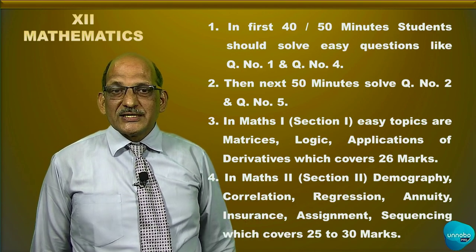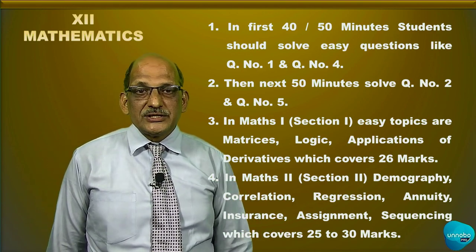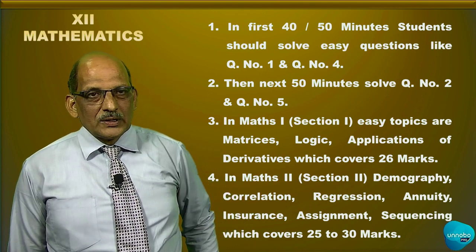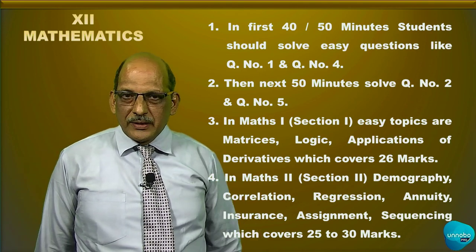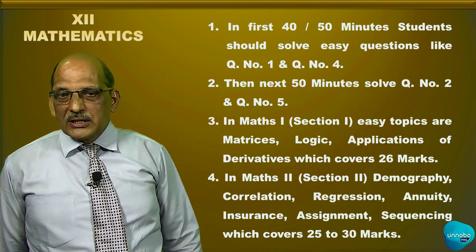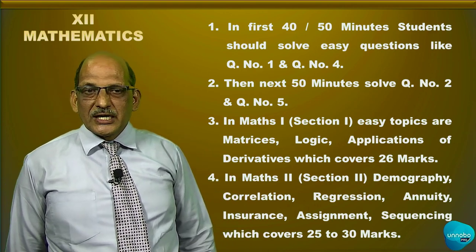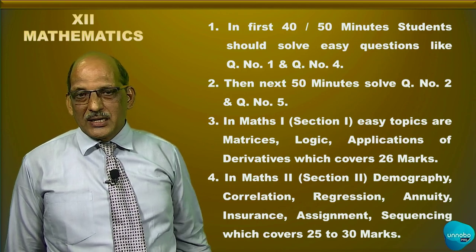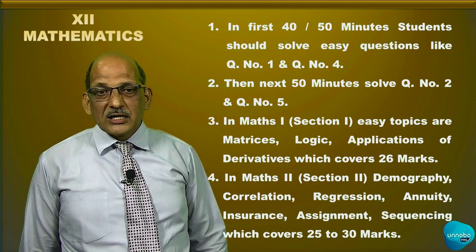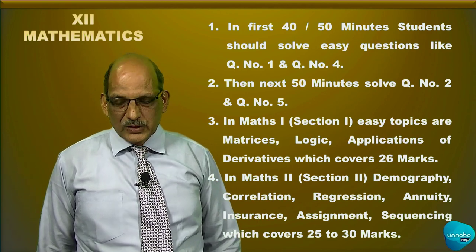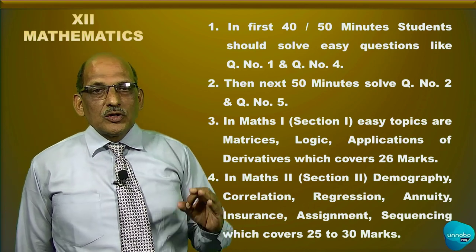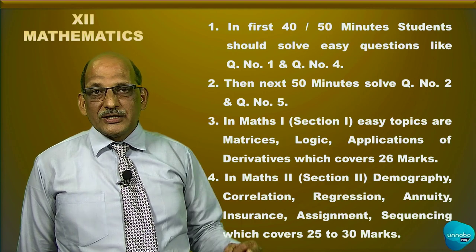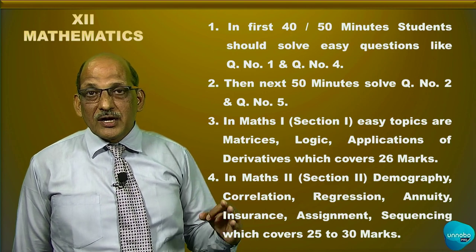Students can easily score 26 marks if they concentrate on these three topics. In section two, topics like demography, correlation, regression, annuity, insurance, and assignment are the most easy topics and carry high weightage — covering nearly 30 marks. If you concentrate on these topics you can easily score 70 to 75 percent out of hundred in mathematics.